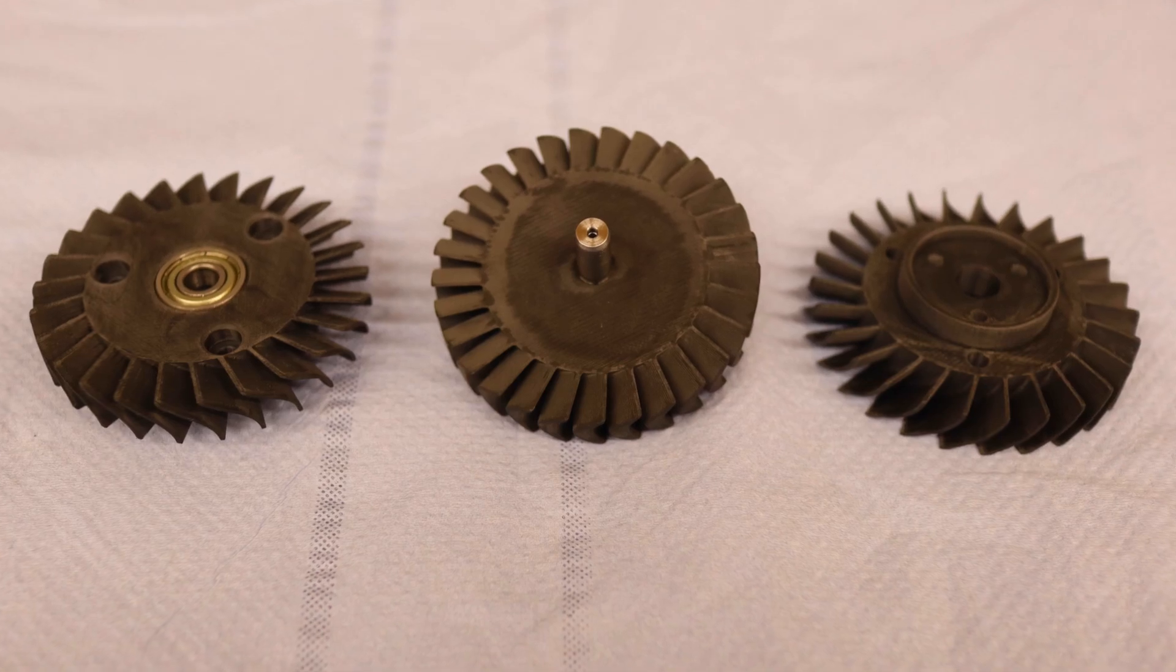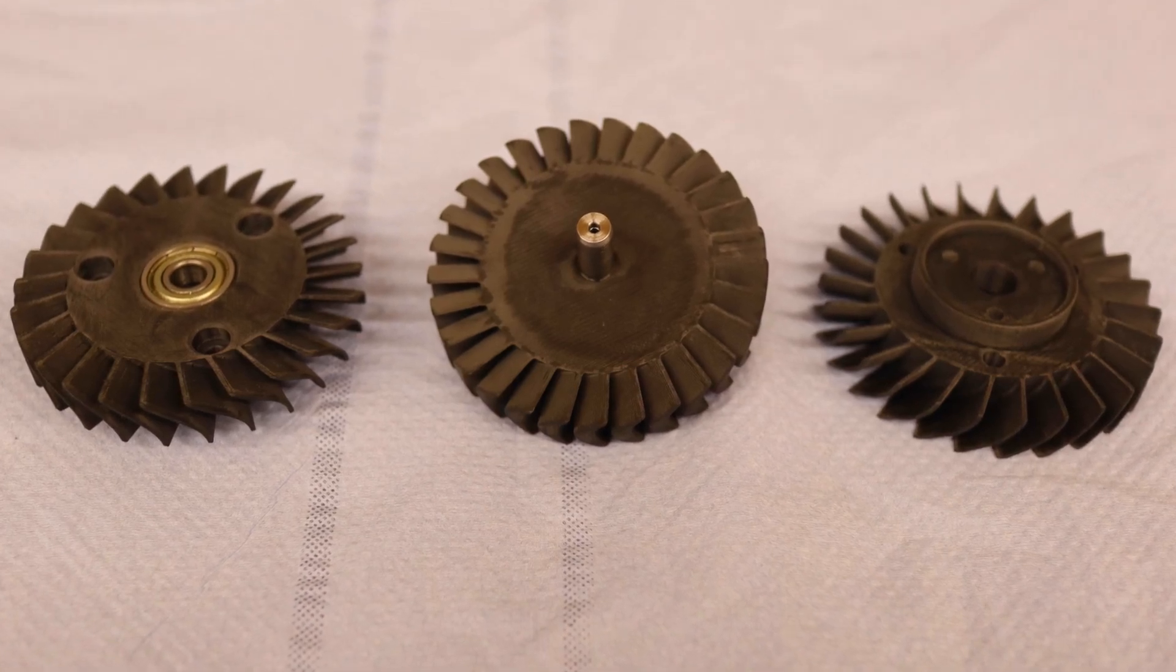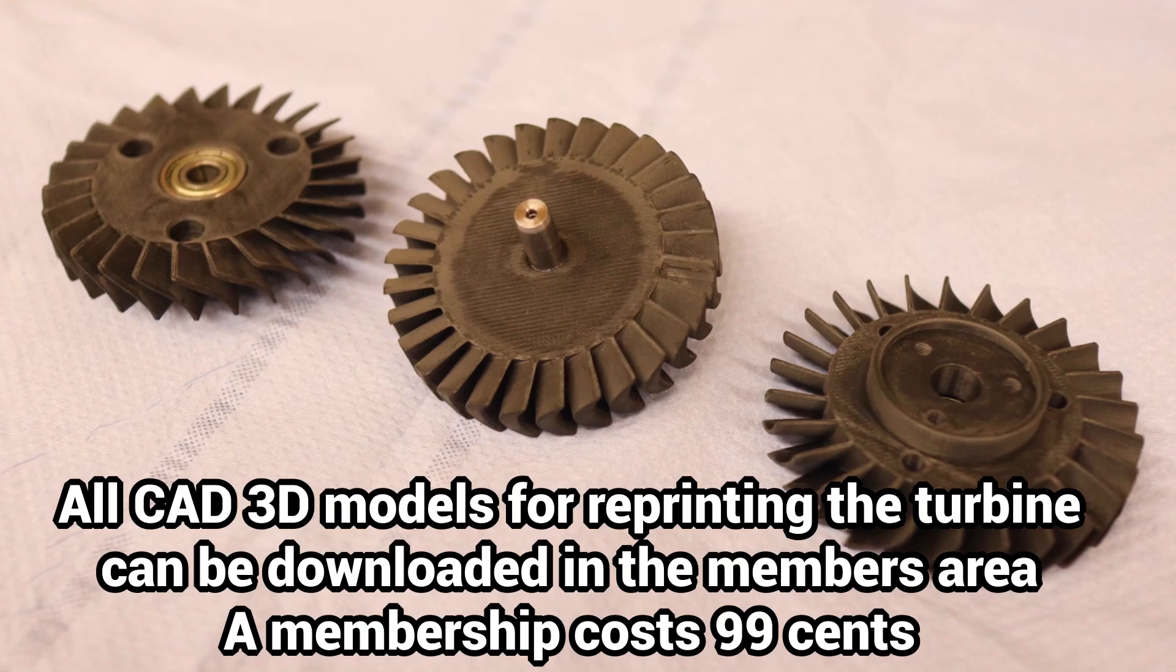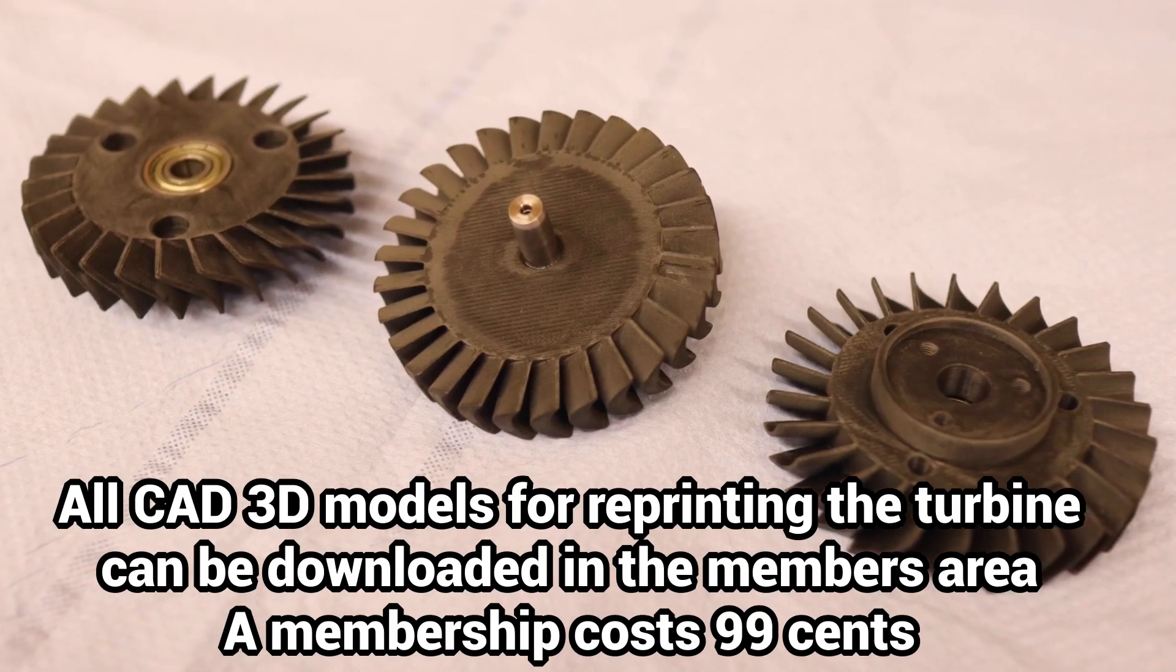After removing the support structures and deburring, the bore bearings can be pressed directly into the guide vanes and the shaft can be glued to the rotor.